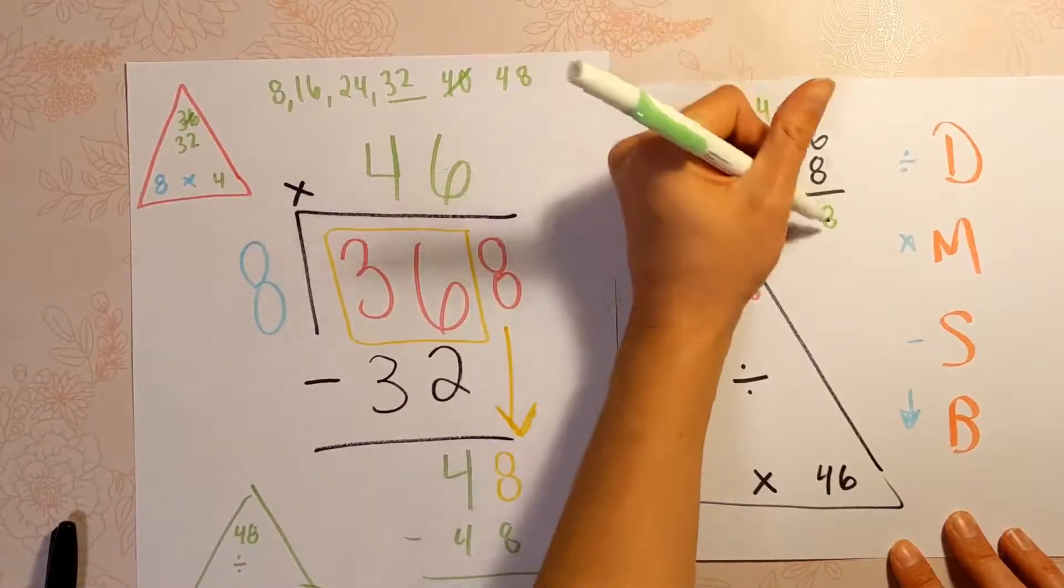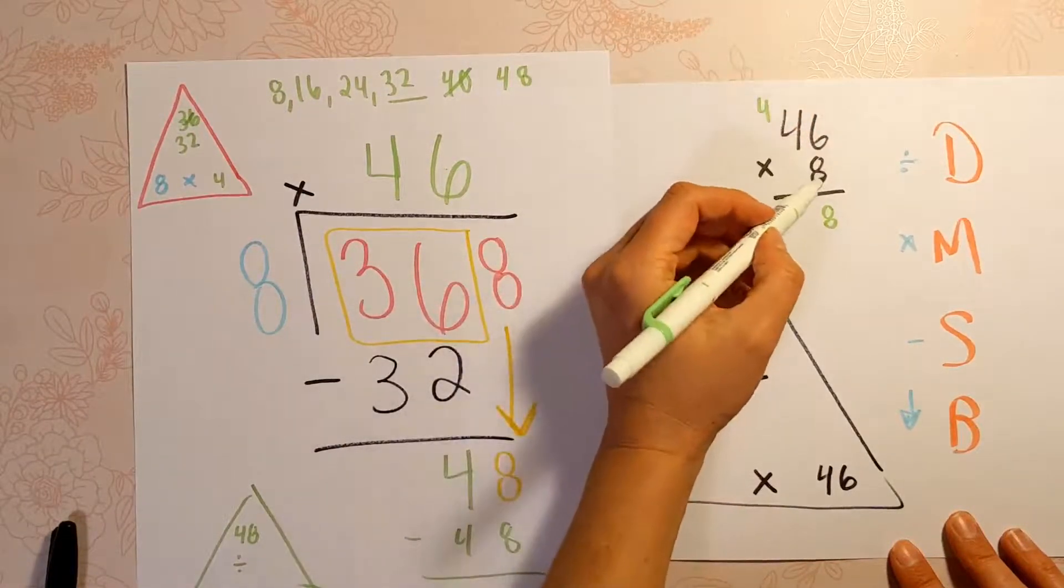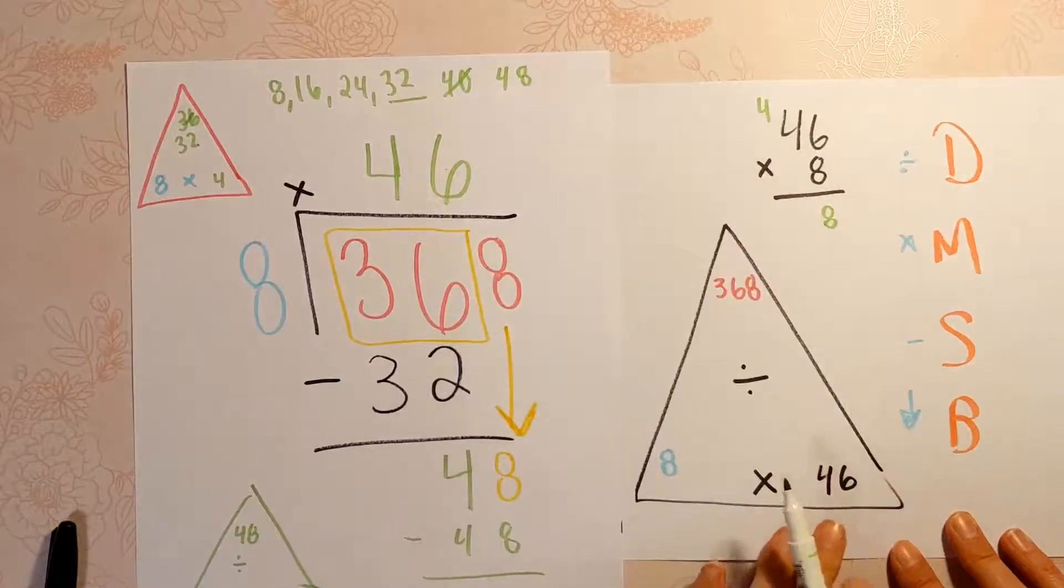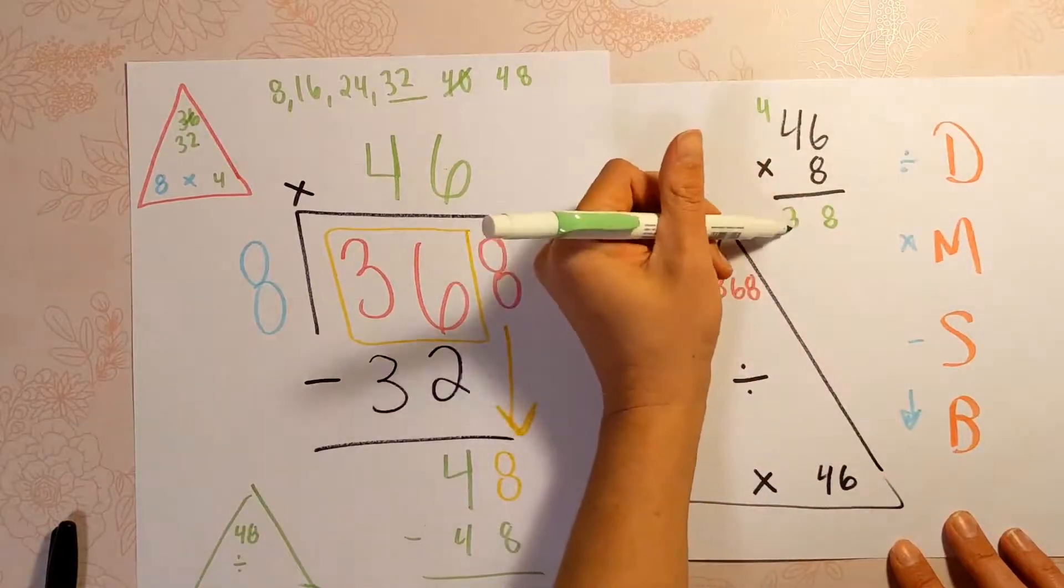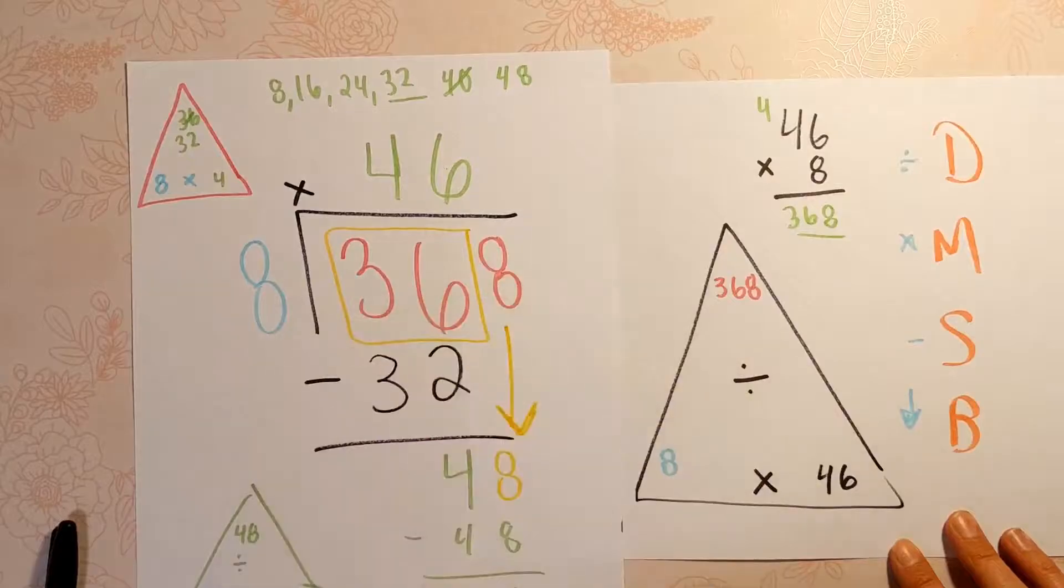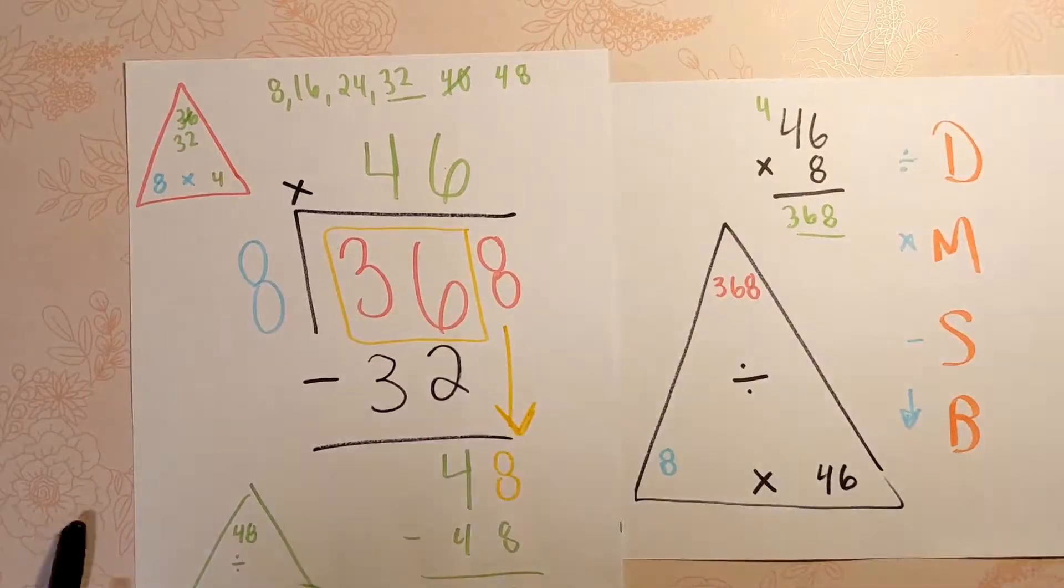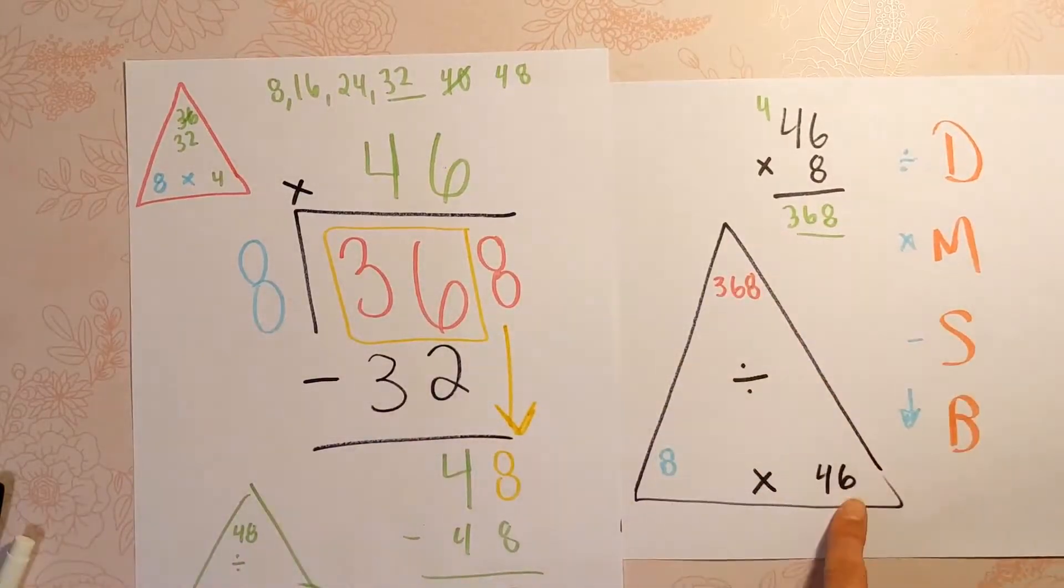8 times 6 is 48. 8 times 4 is 32, plus 4 is 36. So 368 divided by 8 is 46.